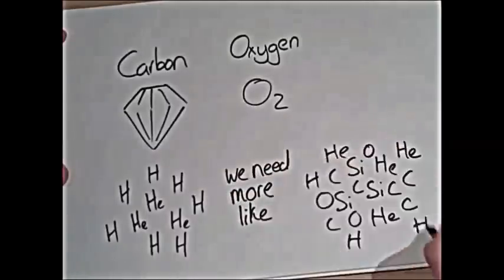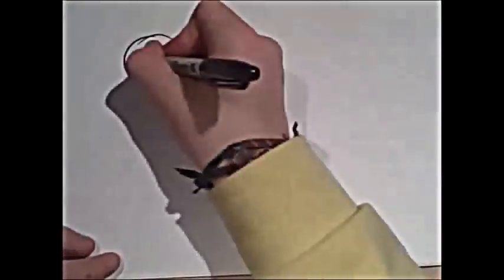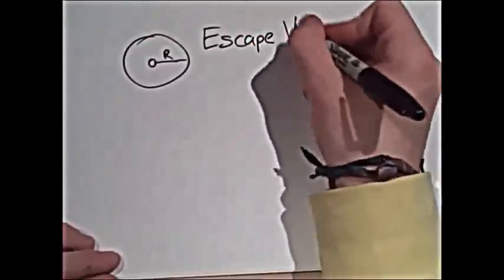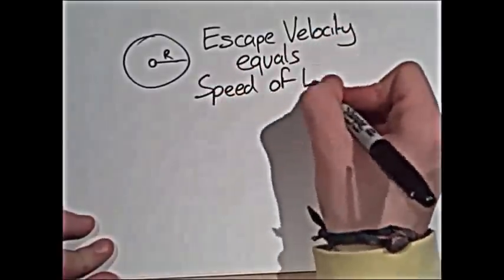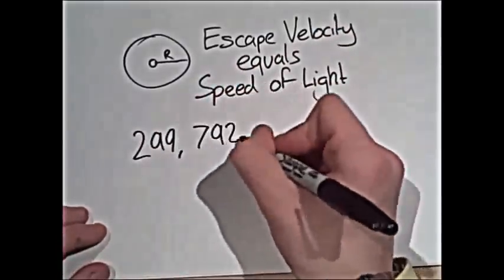it will collapse into being smaller than its Schwarzschild radius. The Schwarzschild radius is the distance from the center to the edge, in which all the object's mass would have to be squeezed into, so that the escape velocity of the object will equal and exceed the speed of light.